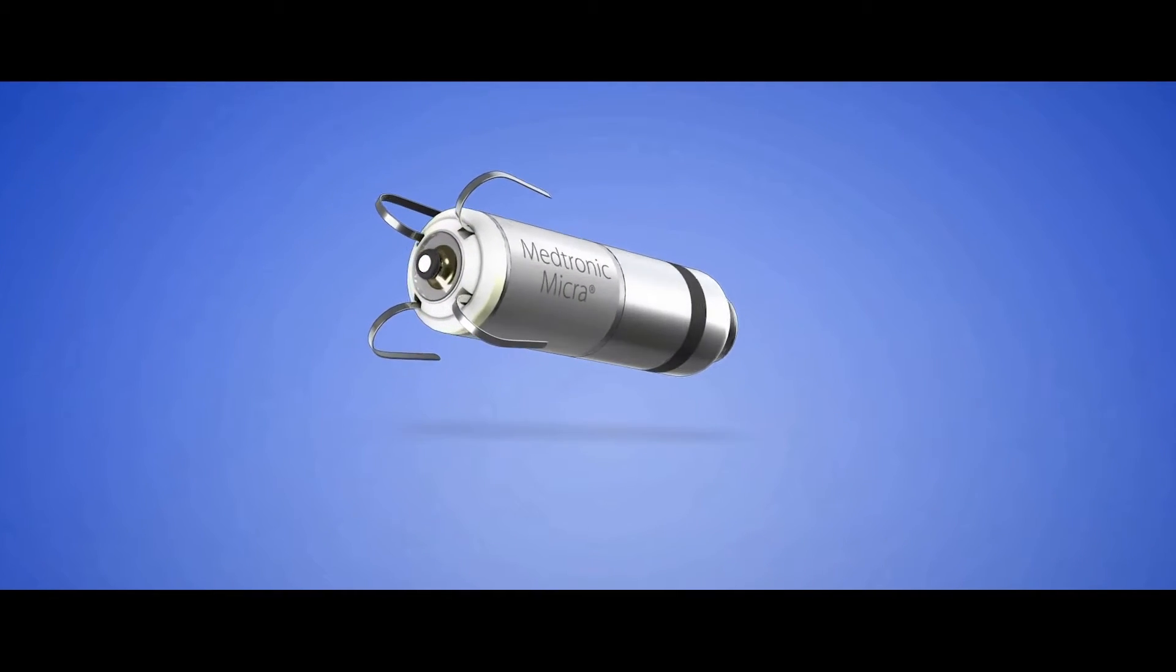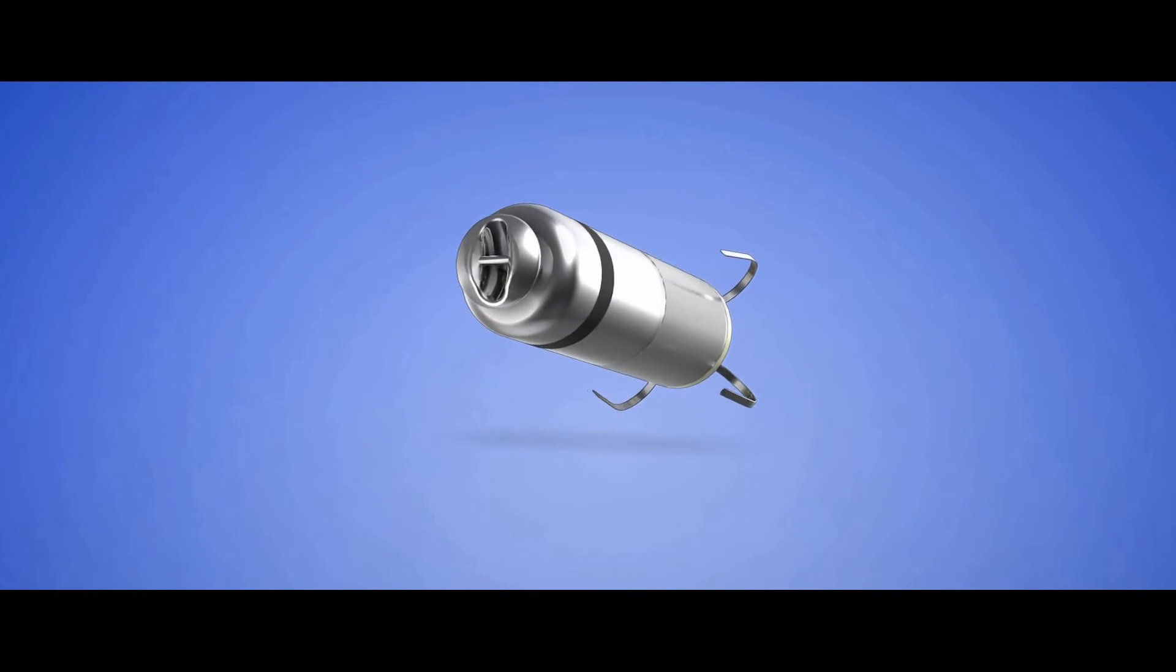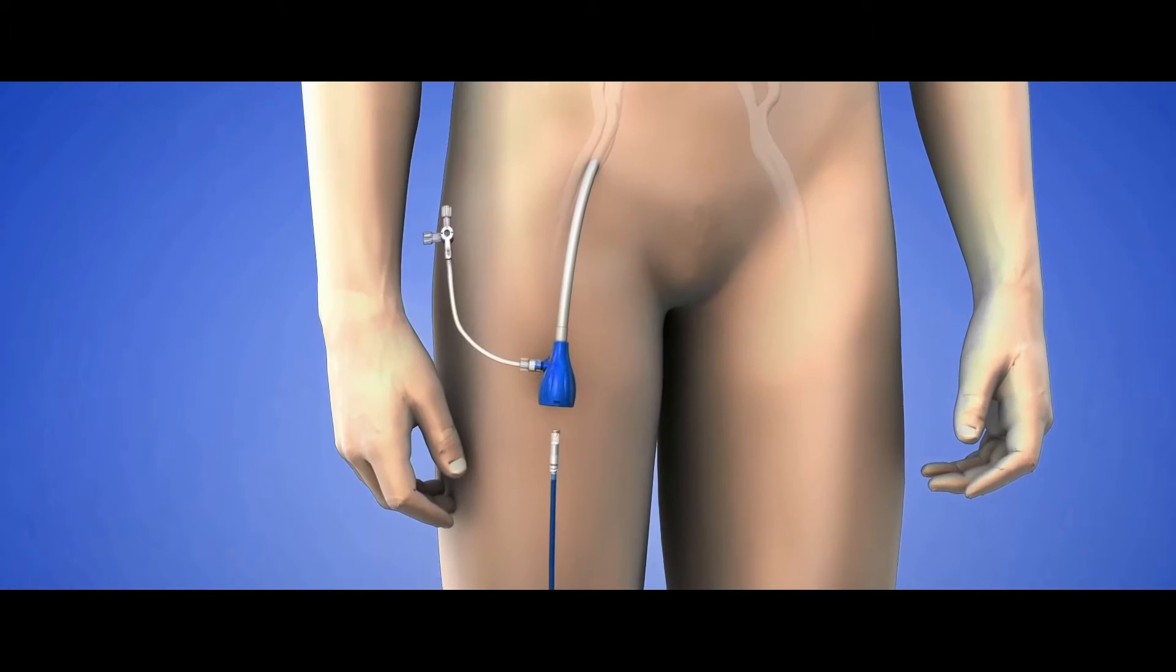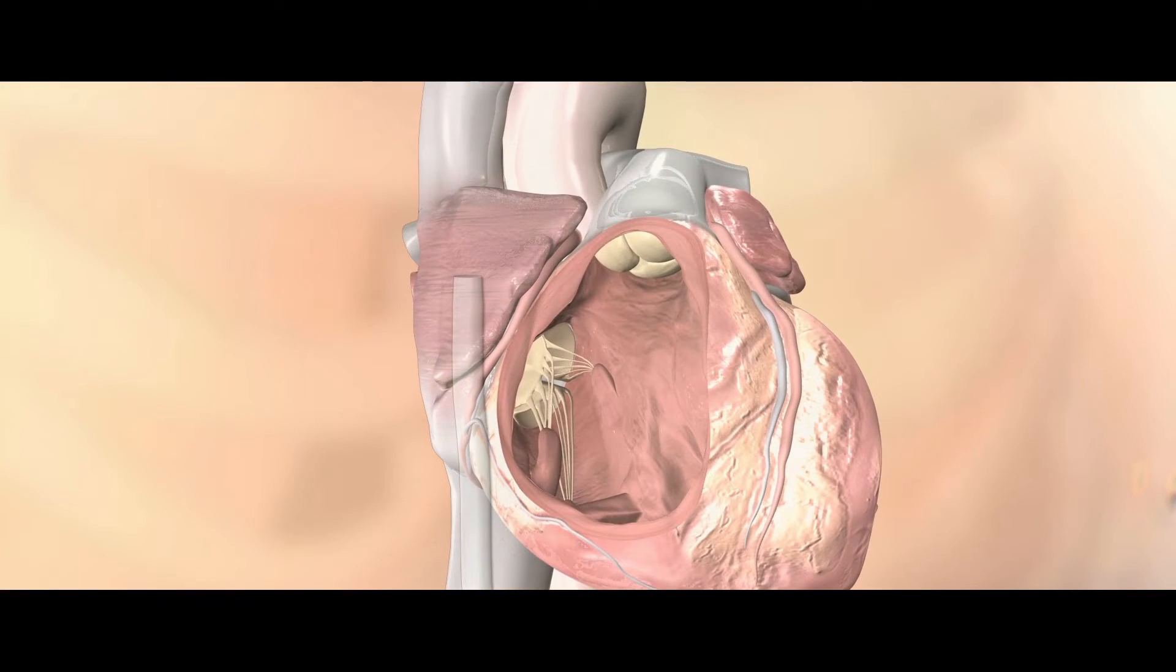The circuitry, the battery, the electrodes, and the memory are all in the pacemaker itself. With Micro, we implant in the heart, in one particular area, using catheters to deliver the pacemaker.